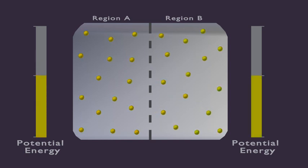The movement stops as soon as potential energy of the two regions becomes equal. This movement of molecules from region of high concentration to the region of low concentration is called diffusion.